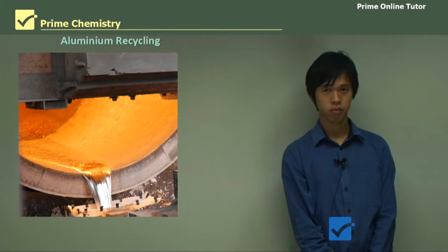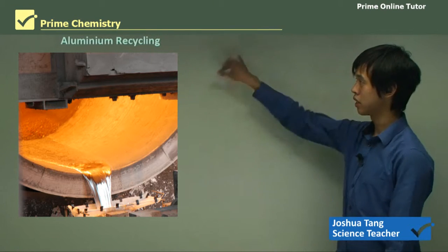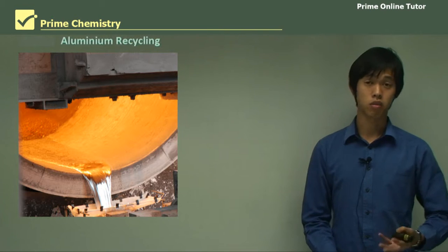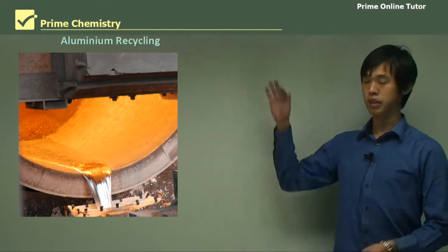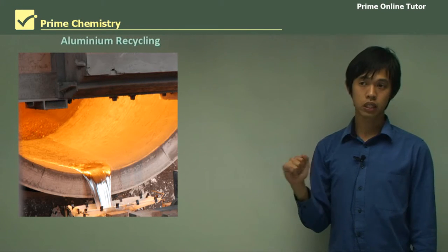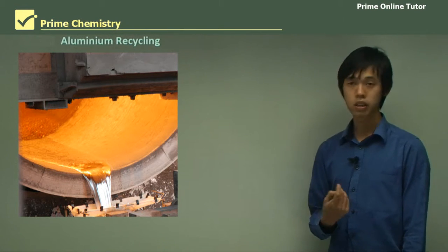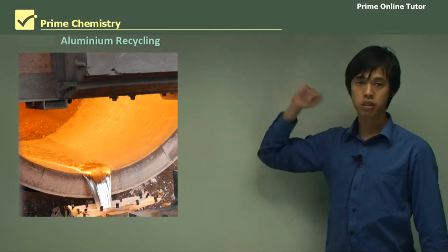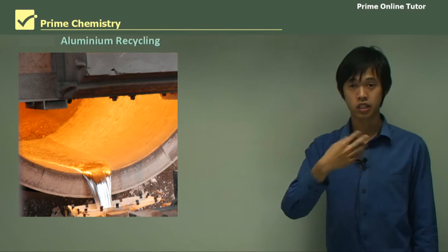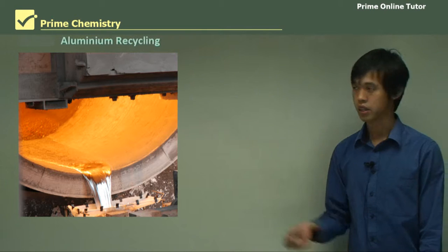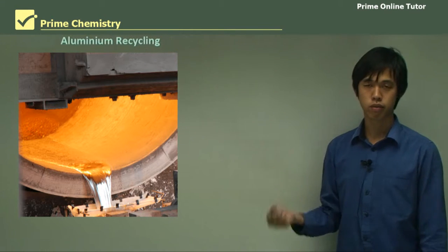Hello, everyone. Welcome again. Today's lesson will be on the metals module of year 11 chemistry. In the previous two lessons, we talked about mineral ores and refining minerals in terms of copper extraction. But this time, now that we've got our pure aluminium, can we actually recycle it? So what can we do to extend the lifetime of the metals we extract from the ground? That's what we're going to talk about today: aluminium recycling.